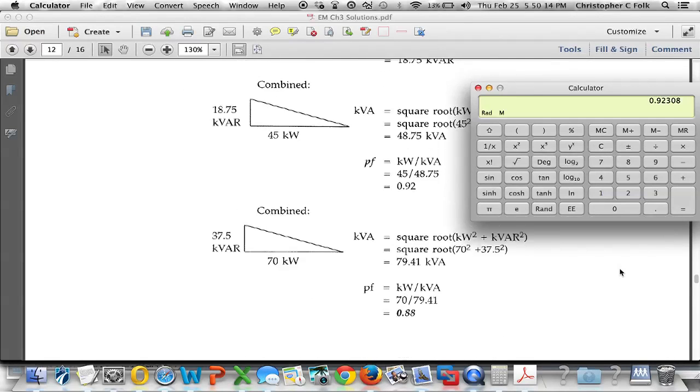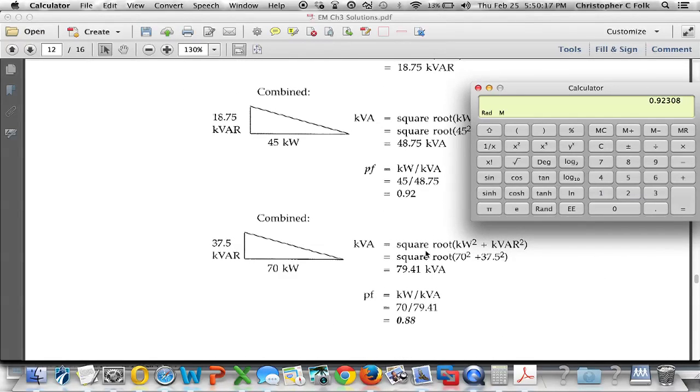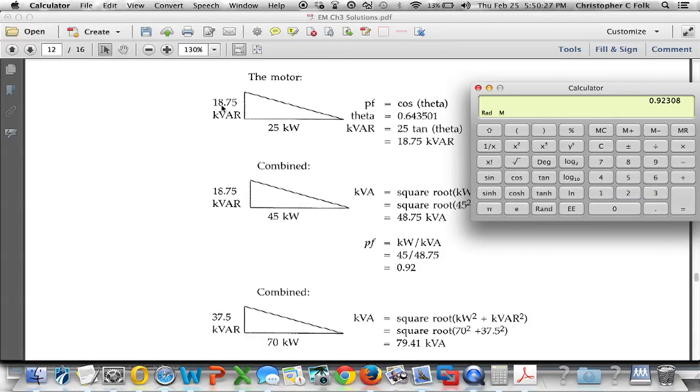So if I scroll down now, and you'll see in the solutions manual, they say, I want to add a second motor. So by adding a second motor, what happens? Well, if one motor had 18.75 volt amps, kilovolt amps reactive of reactants, then two is going to have twice that amount, and indeed it does. So we add that together.